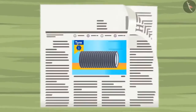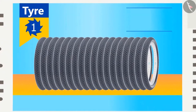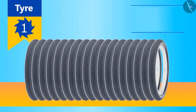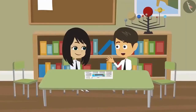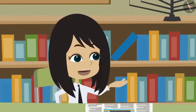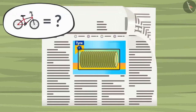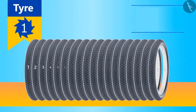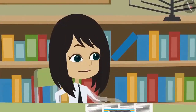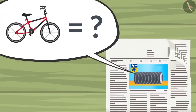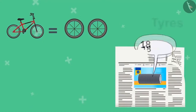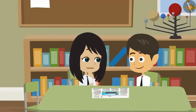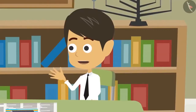Look Reyanj, there are so many tires printed on this newspaper. This is definitely an advertisement of a tire. Maybe, but can you tell me which vehicle these tires belong to? Yes, this is a bicycle tire. But it can also be a tire of a rickshaw. A bicycle has two tires and there are a total of 18 tires. Two 9's are 18, which means these tires belong to 9 bicycles. How did you calculate it so fast? I remember the multiplication table of 2. That's how I could answer immediately.